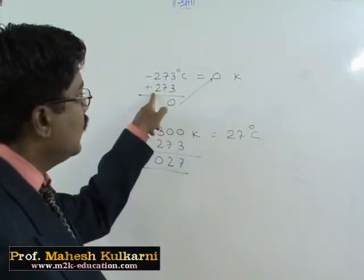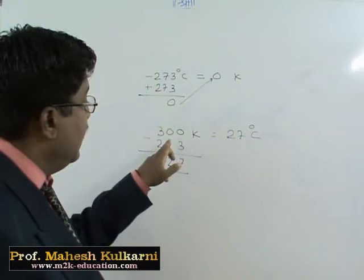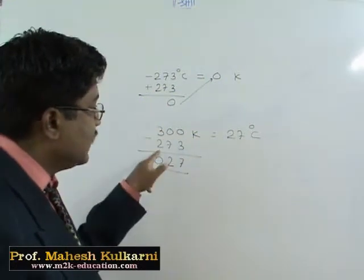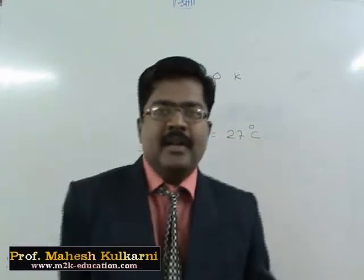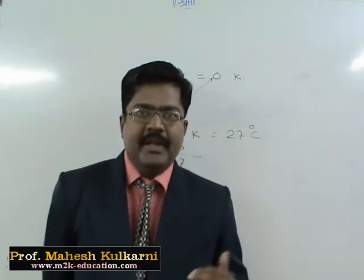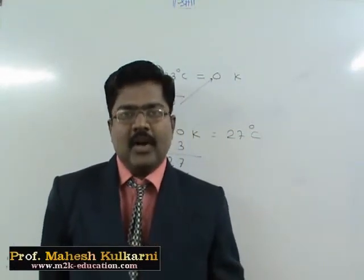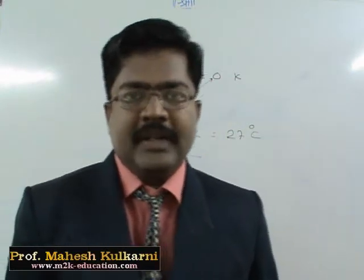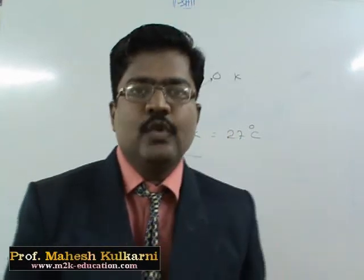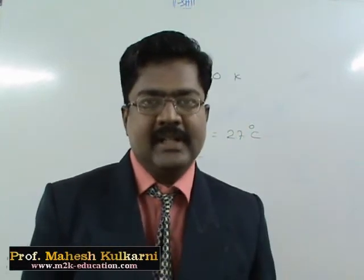From degree Celsius to Kelvin, we have to add 273. And from Kelvin to degree Celsius, we subtract 273. This is one part, that one can convert degree Celsius into Kelvin or Kelvin into degree Celsius.